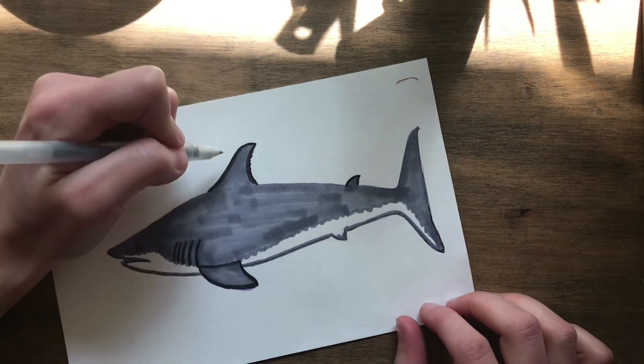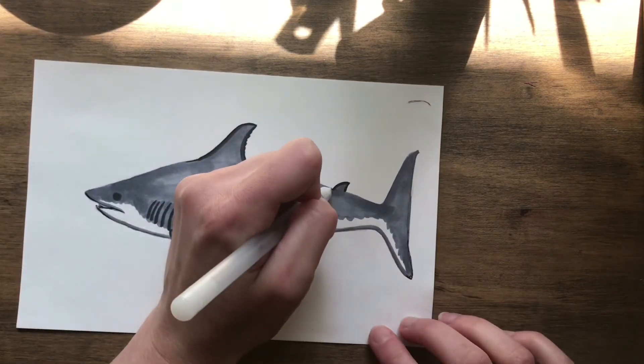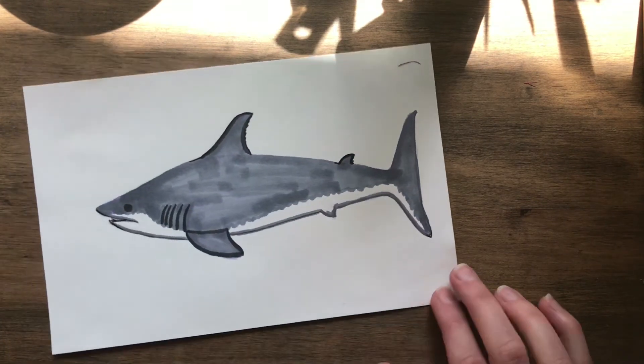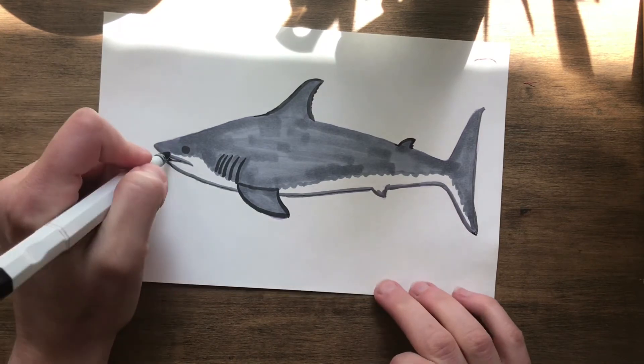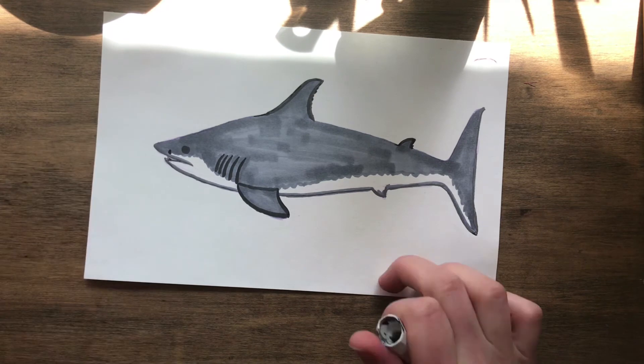And I'm going to go along the back fin. And I'm going to squiggle on the top fin. A little bit. And on that little fin. So that it doesn't look so straight and perfect.